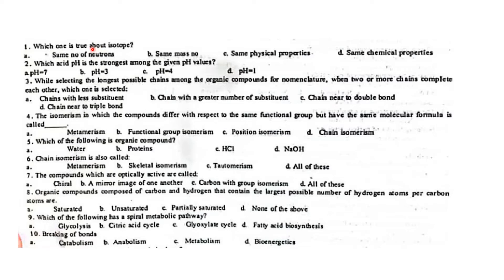Isotopes have the same atomic number but different mass number, because of the different number of neutrons. The correct answer is option number D: same chemical properties. Isotopes have the same chemical properties.